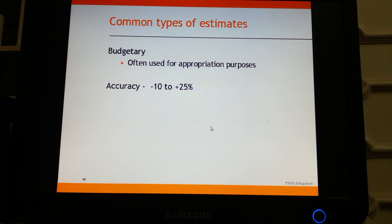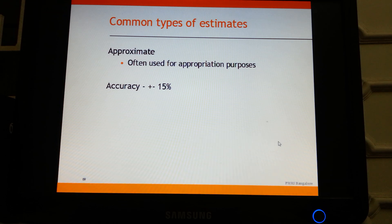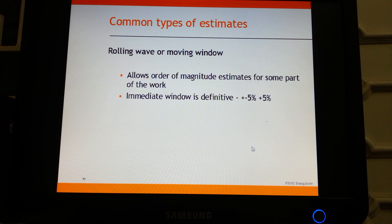For the budgetary estimate, the expected accuracy levels are minus 10 to plus 25 percent. For the approximate estimate, accuracy levels are plus or minus 15 percent. For definitive estimates, accuracy levels are plus or minus 5 percent, and this level of accuracy cannot be achieved without a WBS — without a WBS you will not be able to get a definitive estimate.